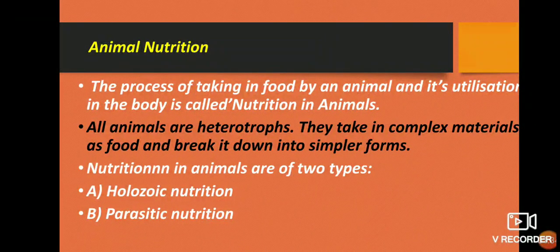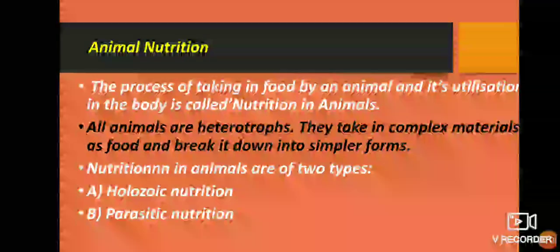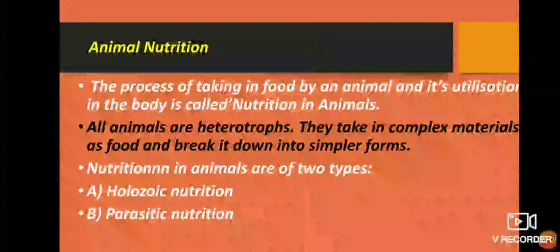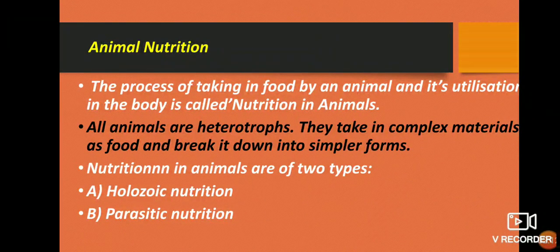In animal nutrition, we can see there are two types of nutrition: holozoic nutrition and parasitic nutrition. Except some animals, no animals have chlorophyll, so they cannot make their own food — they are not autotrophs. They obtain their food from another organism, that's why they are known as heterotrophs. All animals are heterotrophs. They take in complex materials as food and break it down into simpler forms. So, nutrition in animals is of two types: holozoic nutrition and parasitic nutrition.